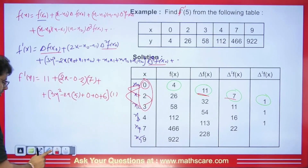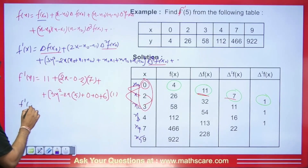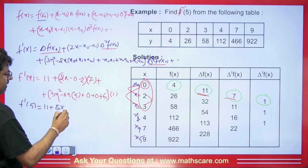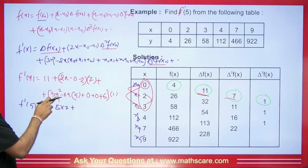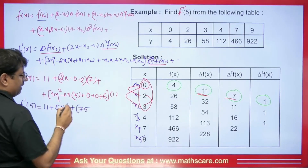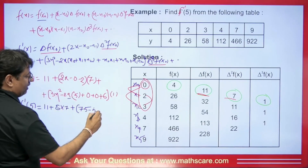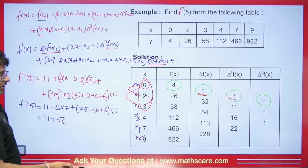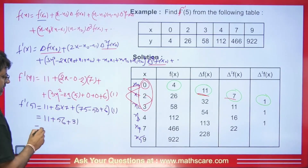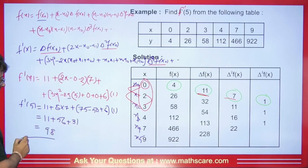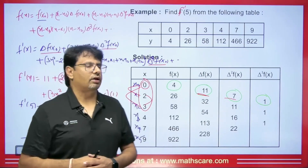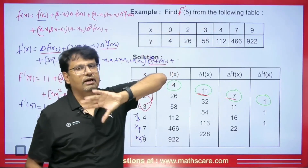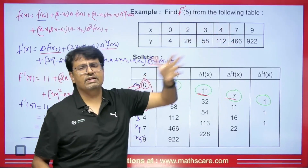We need to find the value of f'(5). So f'(5) = 11 + (2·5 − 2)·7 + (3·25 − 2·5·5 + 6)·1 = 11 + 8·7 + (75 − 50 + 6)·1 = 11 + 56 + 31 = 98. So the value of f'(5) = 98. We used Newton divided difference because the interval is unequal — there are differences of 2, 1, 1, 3, and so on.